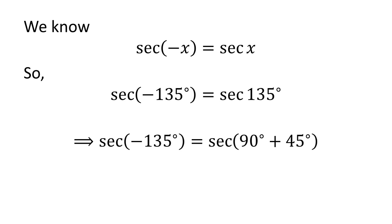Let us apply the above identity for secant of minus 135 degrees, where x is 135 degrees. So secant of minus 135 degrees is equal to secant of 135 degrees. As 135 degrees equals 90 degrees plus 45 degrees, secant of minus 135 degrees equals secant of 90 degrees plus 45 degrees.